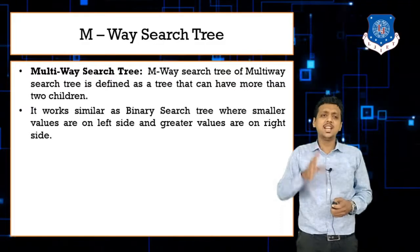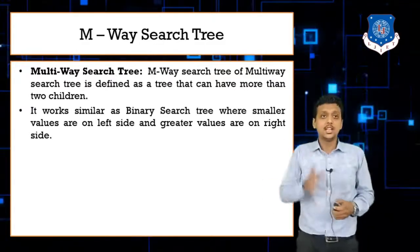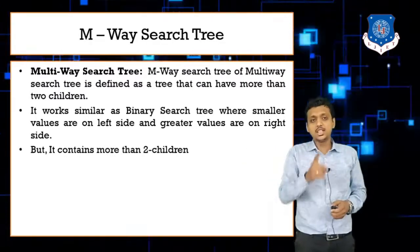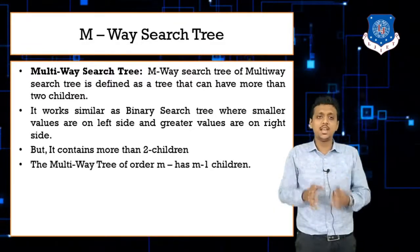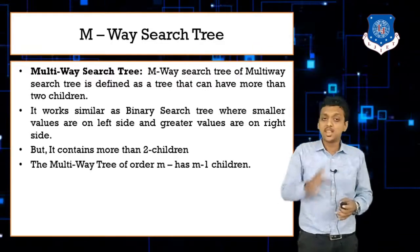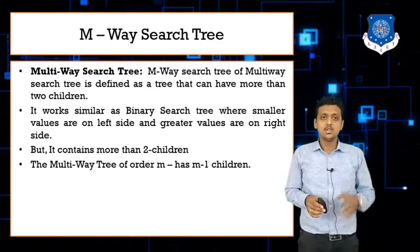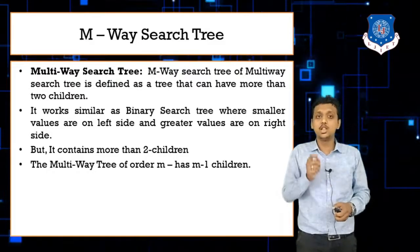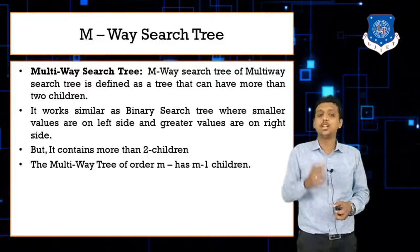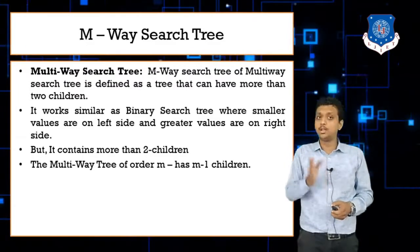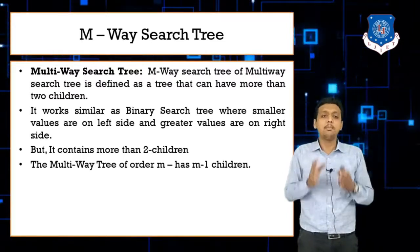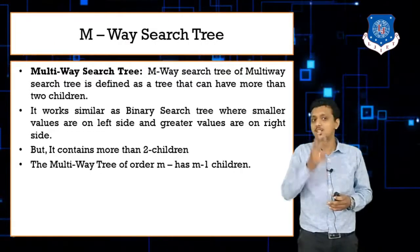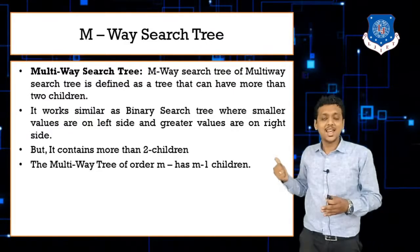It works similar to a binary search tree where smaller values are on the left side and greater values on the right side. If we talk about an M-way search tree of order m, then it must contain m minus one values. Number of children equals number of orders — so if order is two, the order of binary search tree is two.